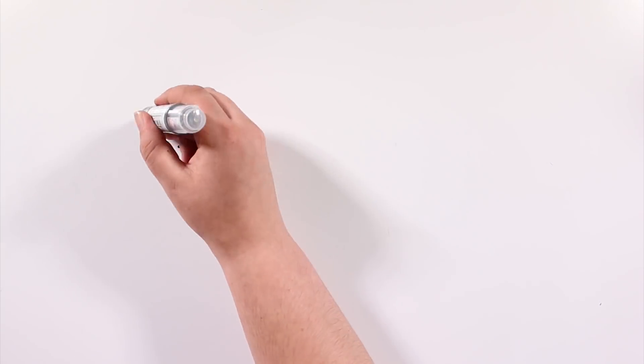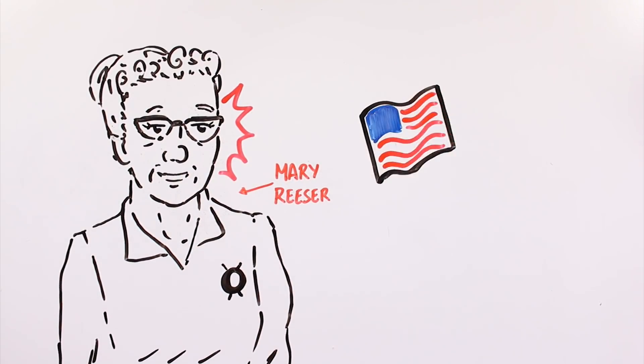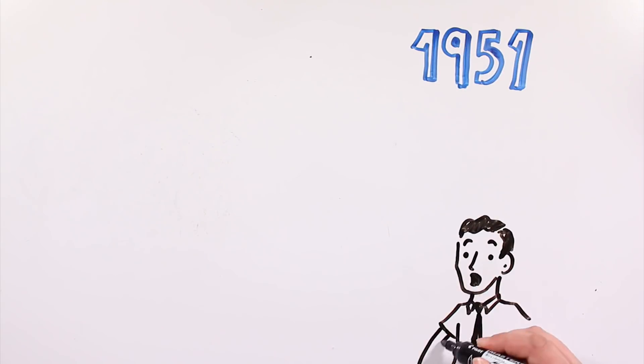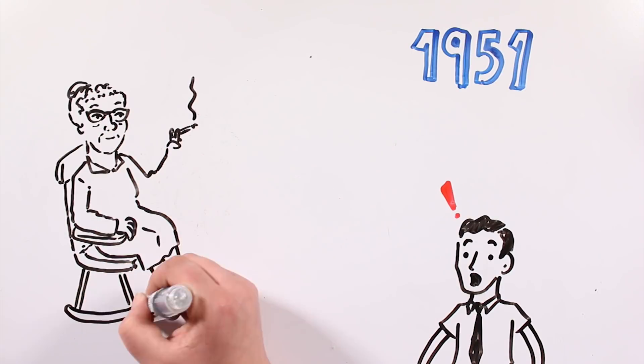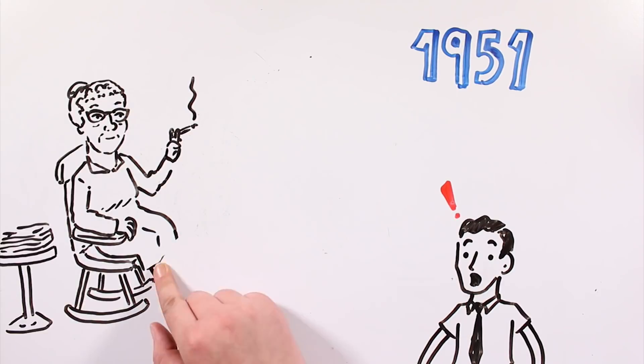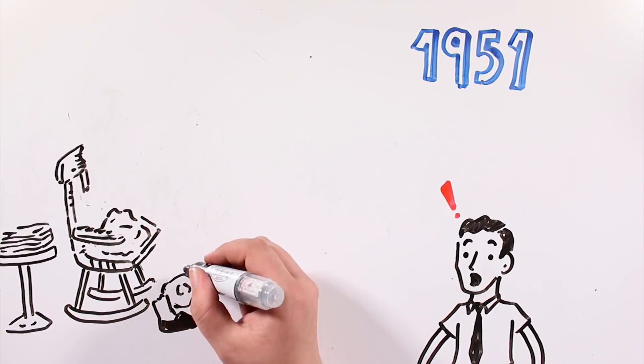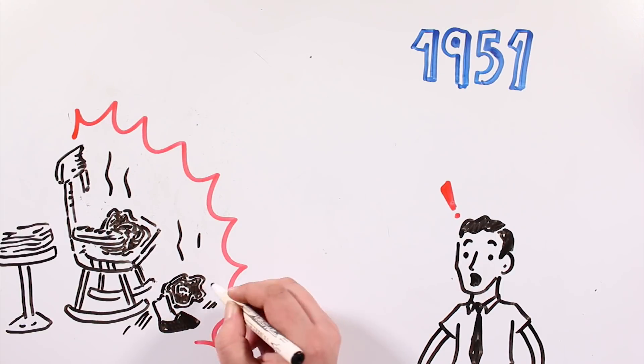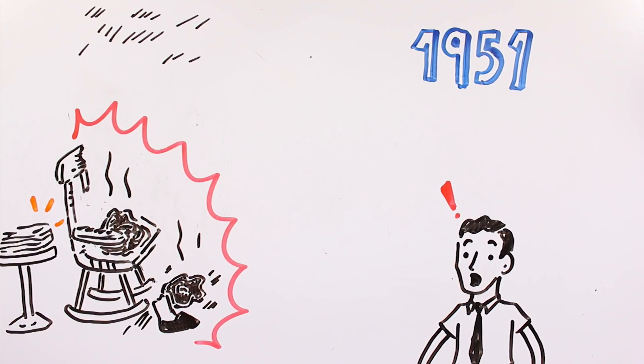The most known case of spontaneous combustion is probably the case of Mary Reiser, a 67 year old widow from Saint Petersburg, Florida. She was found by her son on the morning of July 2nd, 1951. He said that the last time he saw her was the previous night, and that she was smoking and sitting on the chair where her corpse was found. All that was left of her body was ashes, bone fragments, teeth and a foot inside her sneaker. The chair she was sitting on ended up scorched, and there were signs of burning on the floor and the ceiling. However, a pile of paper she had by her side remained intact.